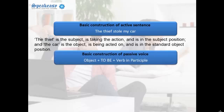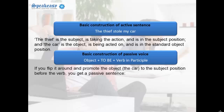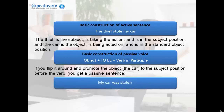Now let's look at the basic construction of a passive voice sentence: the object, plus the verb "to be", and the verb in the past participle. If you flip it around and promote the object — the car — to the subject position before the verb, you get a passive sentence: "My car was stolen."